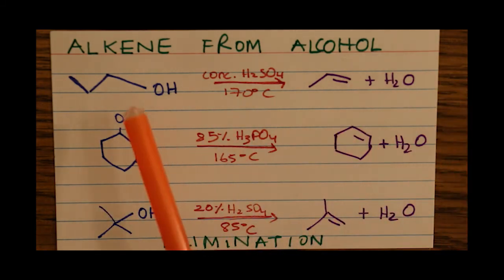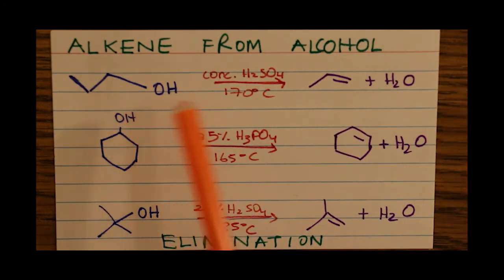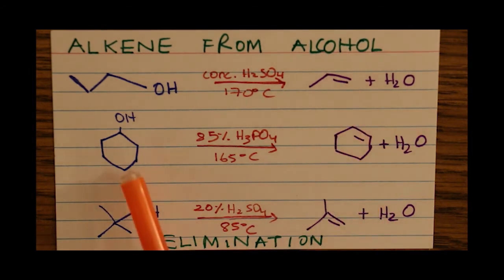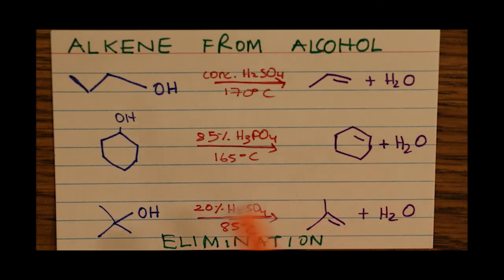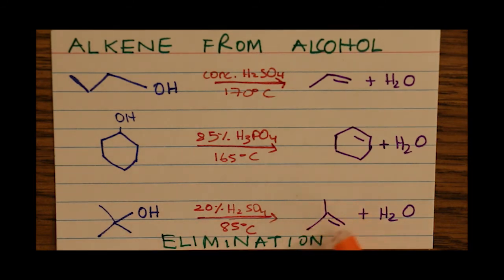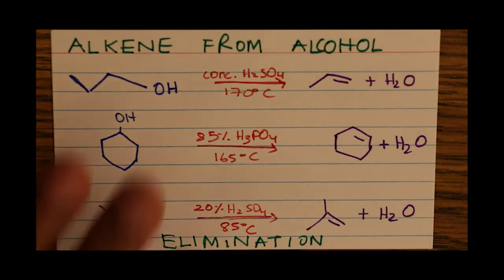Notice the primary alcohol gives this alkene, the secondary alcohol in a ring gives this corresponding alkene, and the tertiary alcohol gives this corresponding alkene. This is an example of alkene synthesis from the dehydration of alcohols.